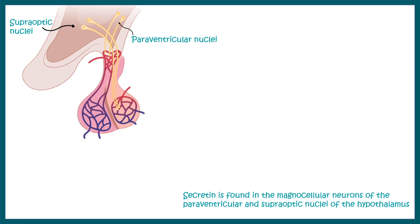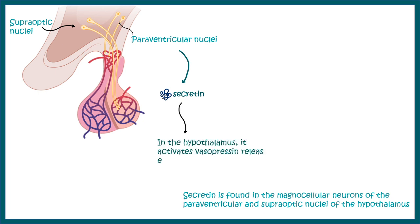It has recently been found that secretin is also secreted from the supraoptic and paraventricular nuclei in the hypothalamus, suggesting it may have a novel role in regulating pituitary secretion or brain physiology. It is hypothesized that secretin secreted from the hypothalamus helps in the release of vasopressin, thereby modulating overall water balance in the body.